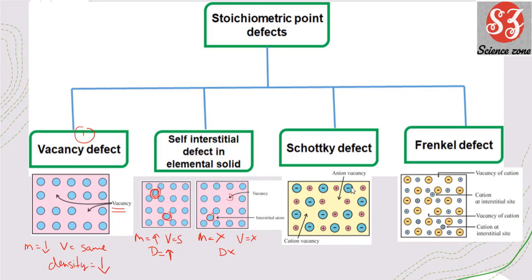Next is the Schottky defect, seen in ionic solids, where one cation and one anion are both missing simultaneously. The solid remains electrically neutral, but mass decreases (two particles missing), volume stays the same, and density decreases. Next is the Frenkel defect, where a cation moves from its normal position into an interstitial space. Frenkel defect is actually a combination of vacancy defect and interstitial defect. Density does not change in Frenkel defect.